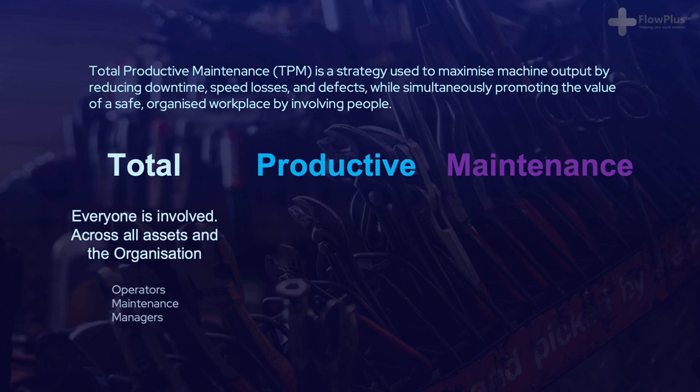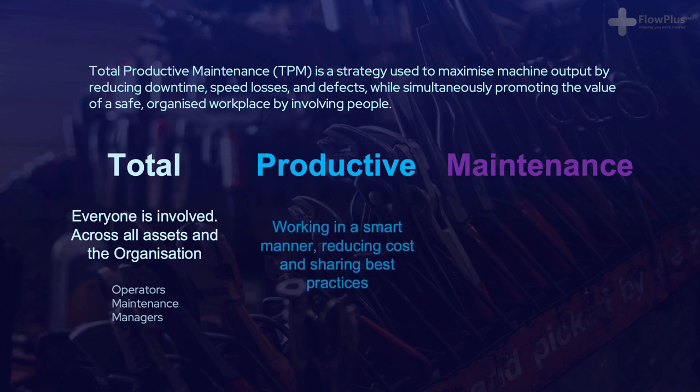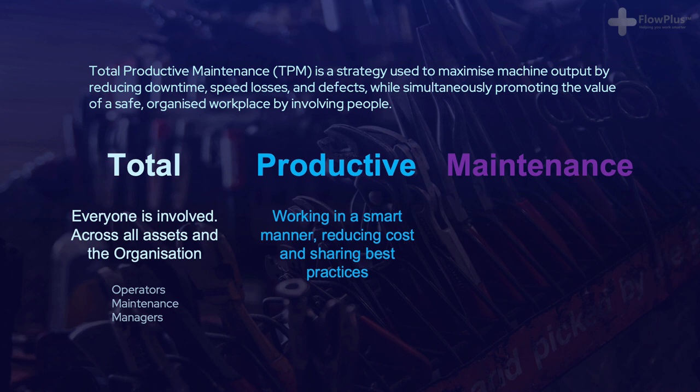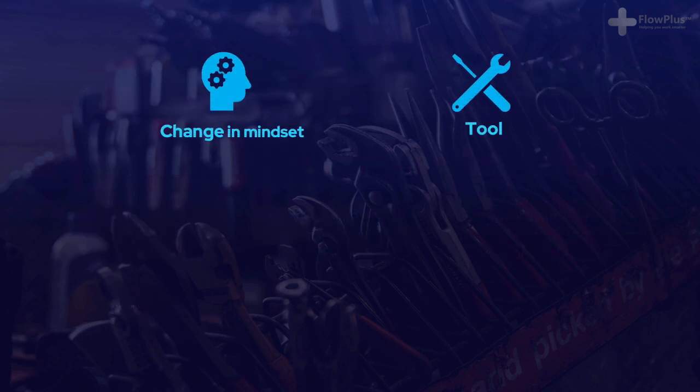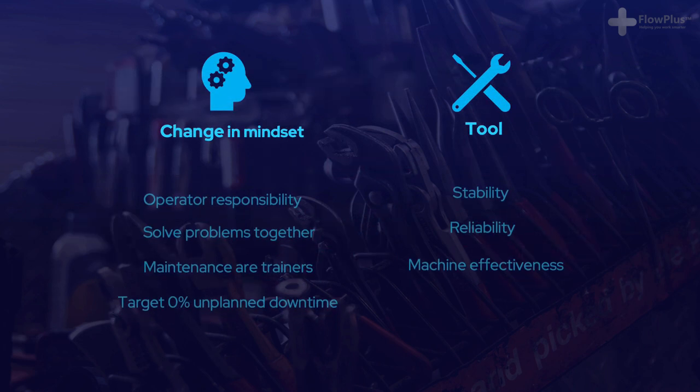If we break down the definition of TPM, it can be found within the words that make it up. Total refers to what the founder of Kaizen Institute says is the true meaning of Kaizen: improving every day, everywhere, with everyone — in this case with operators, maintenance and managers. Productive refers to making the improvements in a productive, cost-effective way. And finally, maintenance refers to the aim of TPM: to reduce machine downtime and optimise maintenance activities.